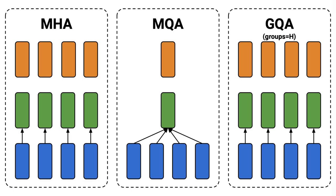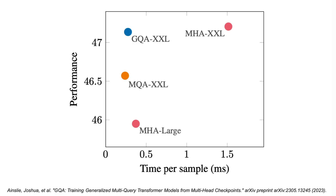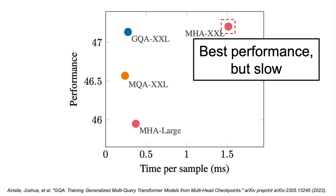And, if we were to set the number of groups to be equal to h, the group query attention would be identical to the multi-head attention. Now, let's compare the performance of these methods. This figure shows the performance versus time for all these methods. And, what can be observed from it is that while the multi-head attention has the best performance, it's also the slowest method.